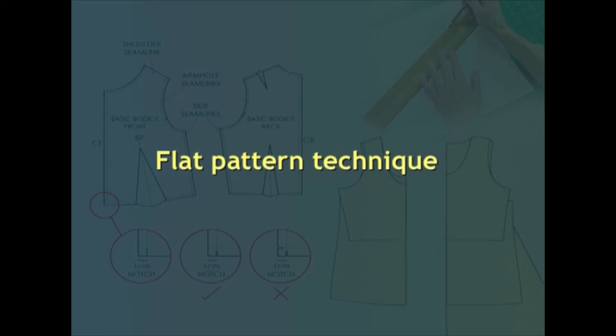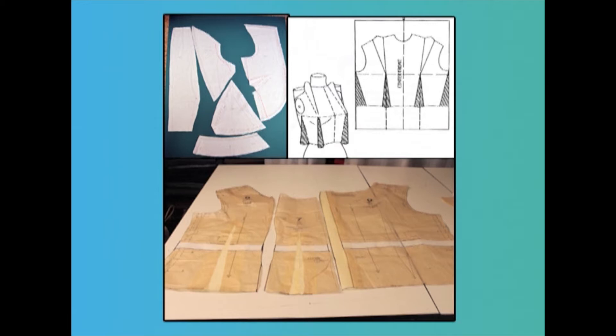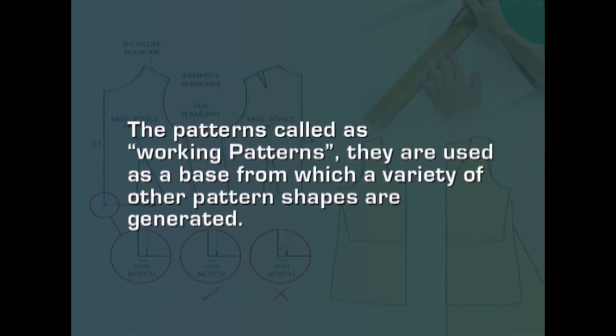The second technique is flat pattern technique. Flat pattern making is the fastest and most efficient method ever devised for developing patterns. It can control the consistency of size and fit of mass-produced garments. The system depends upon patterns that have been previously developed and perfected, called working patterns. They are used as a base from which a variety of other pattern shapes are generated. The original working pattern is never altered but must retain its original form to be used as a base for developing other design patterns. In this way, the original is retained as a master copy.